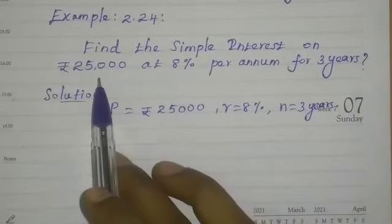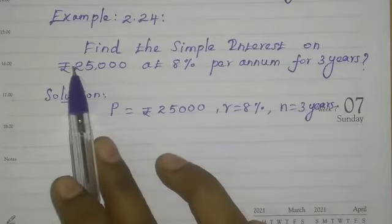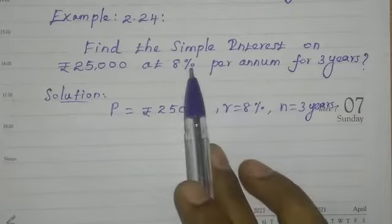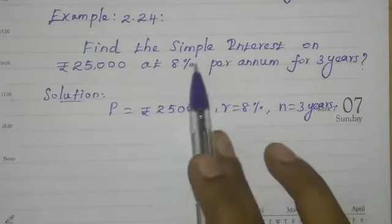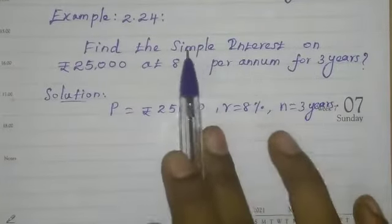Here rupees 25,000 per annum means one year. At 8% rate of interest, we need to find the simple interest.